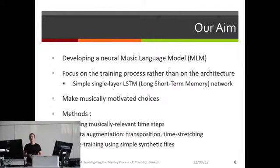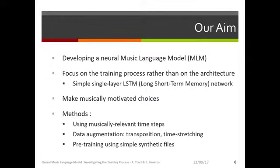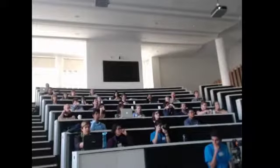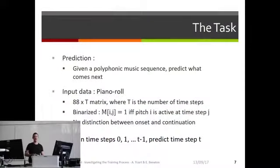And in that talk, I'm going to focus on the training process, rather than on the architecture, because very often, people that use neural networks for music are people from machine learning. So they use very sophisticated architectures, but they don't always make musically-motivated choices. So I'm trying to take the other path. And so I'm using a very simple, single-layer LSTM network. So LSTM is a kind of recurrent neural network that is tremendously popular. It's basically the default now. And so I'm going to try various things, in particular, using musically-relevant time steps, using various data augmentation techniques, and pre-training the networks with simple synthetic files. But the idea behind that being that when you learn music theory, you start with scales, with chords, with simple stuff, and then you move on to more complicated stuff.